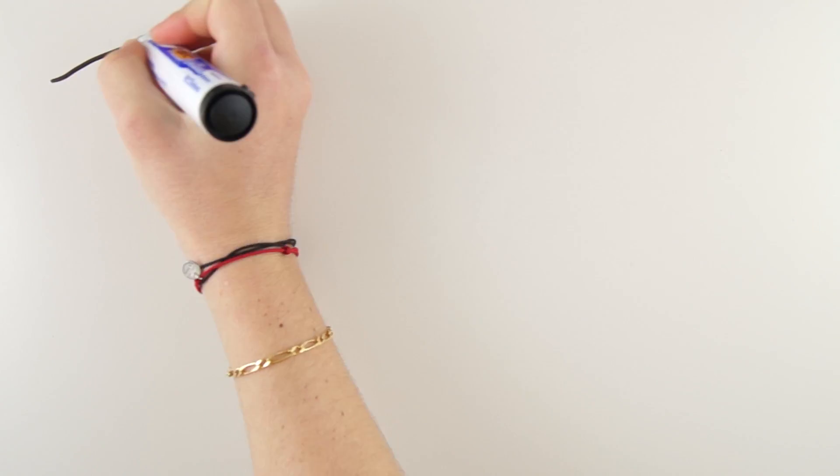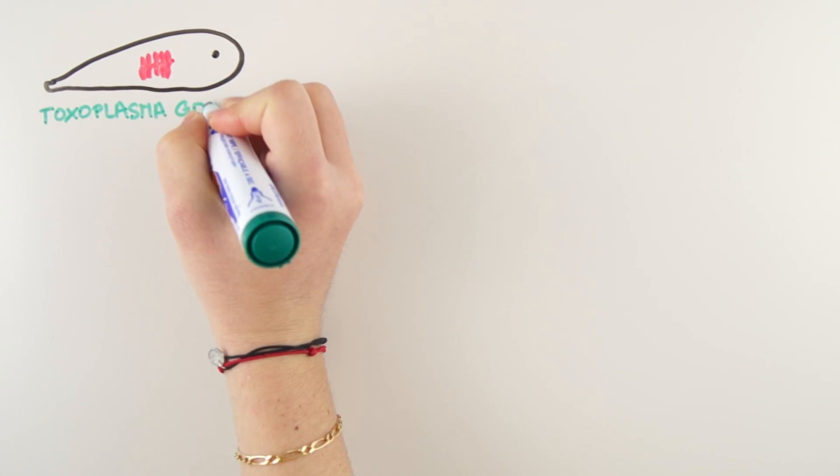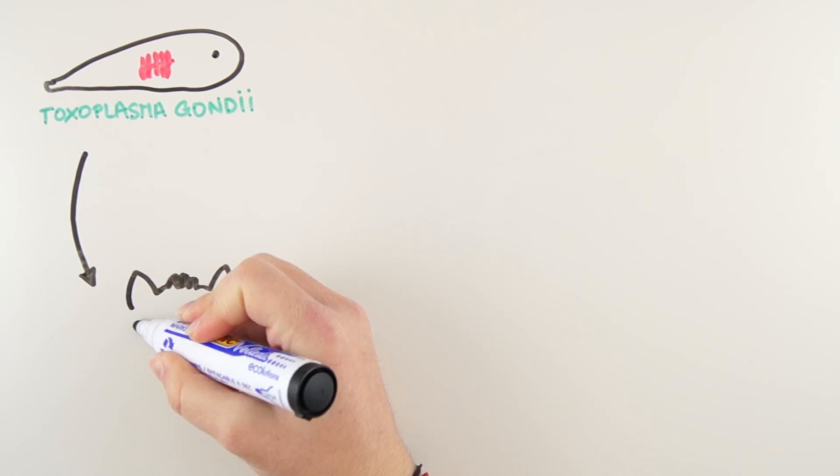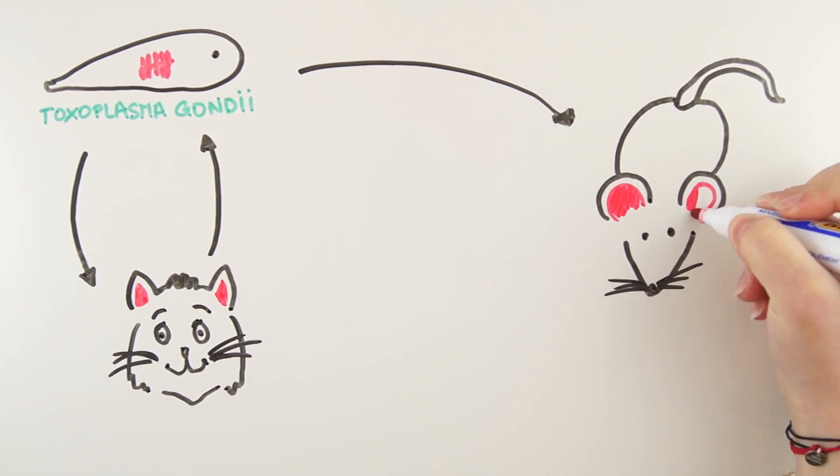Finally, what should we think of Toxoplasma gondii, this unicellular parasite known to give toxoplasmosis? This parasite can only reproduce in cats and uses mice to spread from cat to cat.